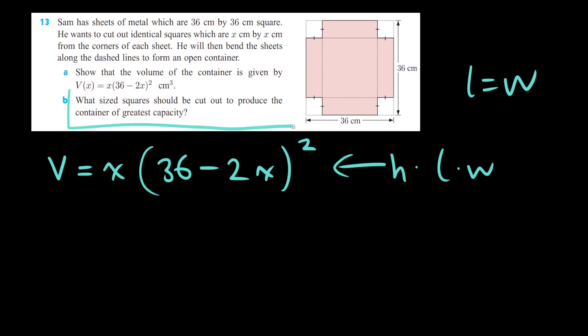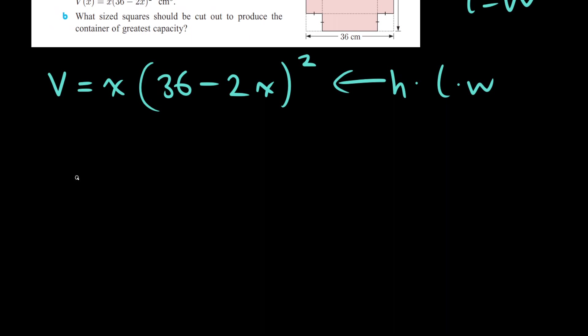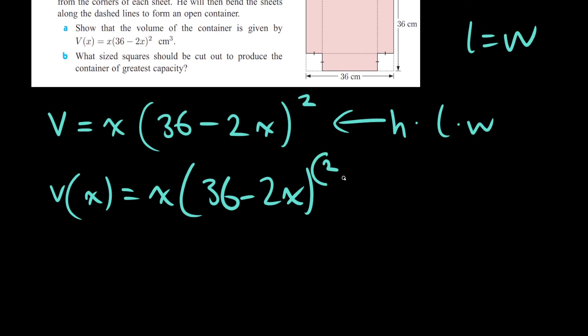The next part asks, what size squares should be cut out to produce the container of greatest capacity? So assuming we have some sort of graph where we have a local minimum, maybe a local maximum, we need to use the derivative function to find where we have plateaus, where we have zeros, a zero rate of change. Then we can use a sign diagram or use some common sense to figure out which answer is the appropriate one for our solution here.